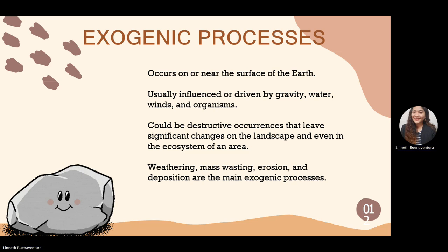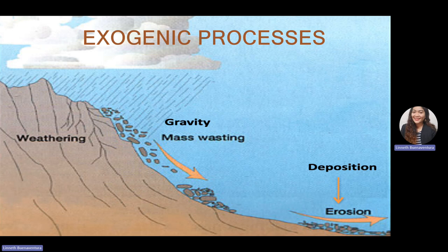This image shows the exogenic processes in our environment or ecosystem — weathering, mass wasting, deposition where sediments are deposited at the bottom, and erosion.